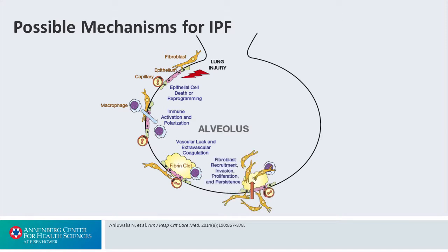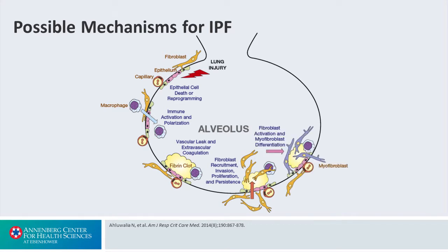We then see that there's a recruitment of various cell lines to help that repair process, including fibroblast recruitment and invasion and proliferation and persistence of those cells. One of the major thoughts in regards to pulmonary fibrosis is that the fibroblast cell line becomes immortalized while the epithelial cells unfortunately die. The next build on that is activation of those fibroblasts and differentiation into a myofibroblast, which is a more universal cell with greater pleiotropic activity that helps mediate that process.